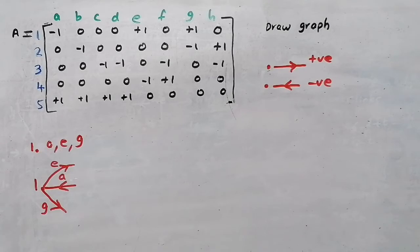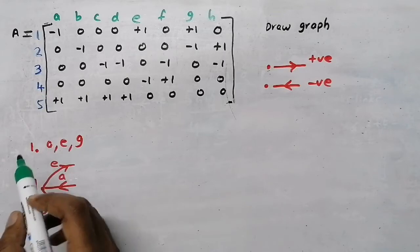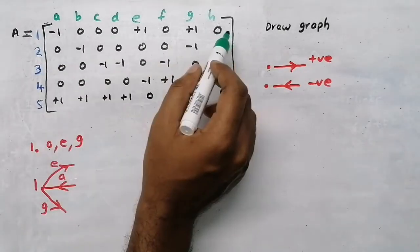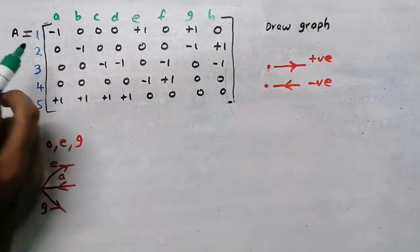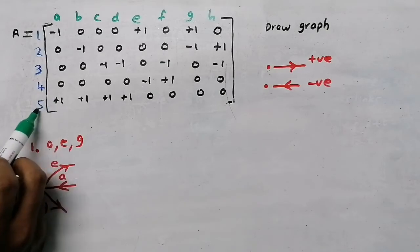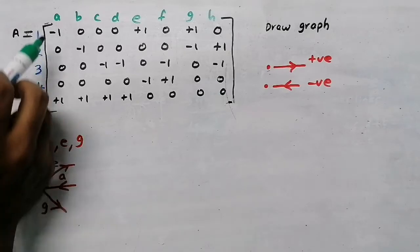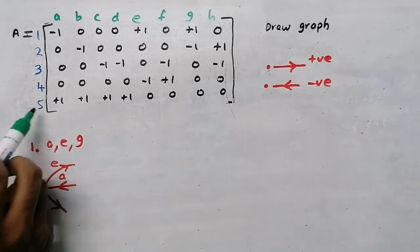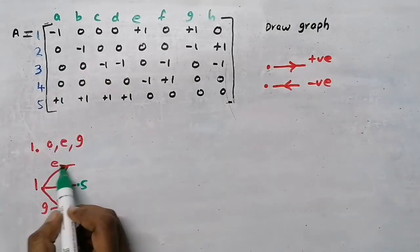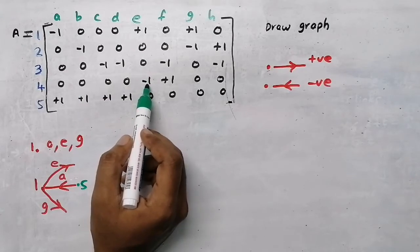I am going to take branch a. Look at the column now - first time you looked at the row, now you are going to look at the column. Here it is minus one and plus one is at node 5. Minus one plus one will become zero, so plus one is at node 5. So branch a - the other end will be at node 5.